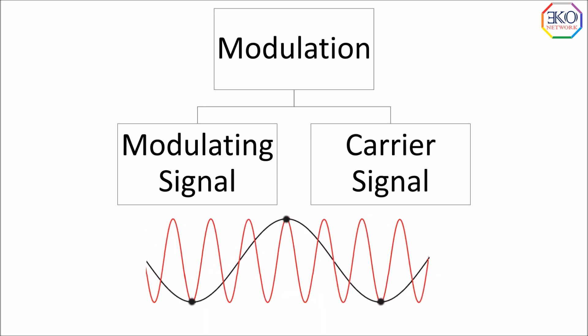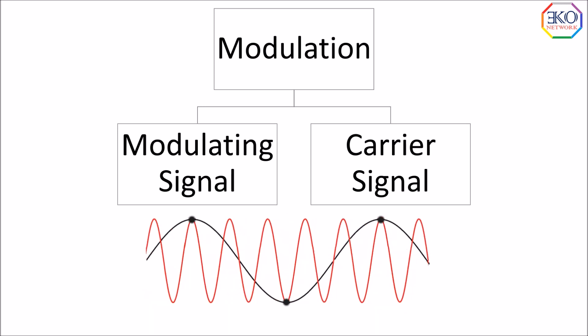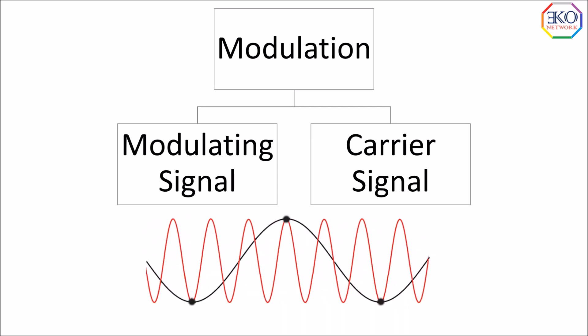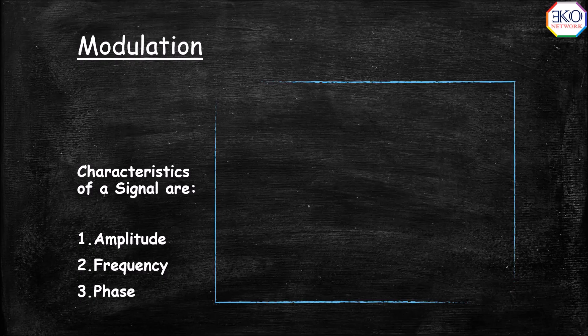The process of modulation basically involves two waveforms or signals. One is the modulating signal and number two is the carrier signal. The modulating signal, which is basically a low frequency signal, is represented here in black color, and the waveform in red color is the carrier signal, which is basically a high frequency signal. The characteristics of a signal are amplitude, frequency, and phase.